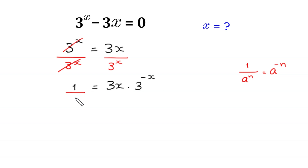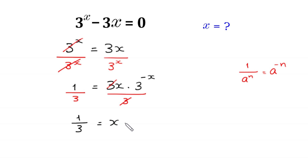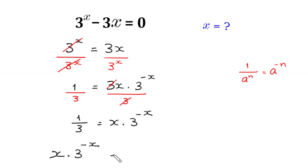From here we divide both sides of this equation by 3. This 3 cancels out, and we are left with 1 over 3 is equal to x times 3 to the power negative x. Rewriting, x times 3 to the power negative x is equal to 1 over 3.